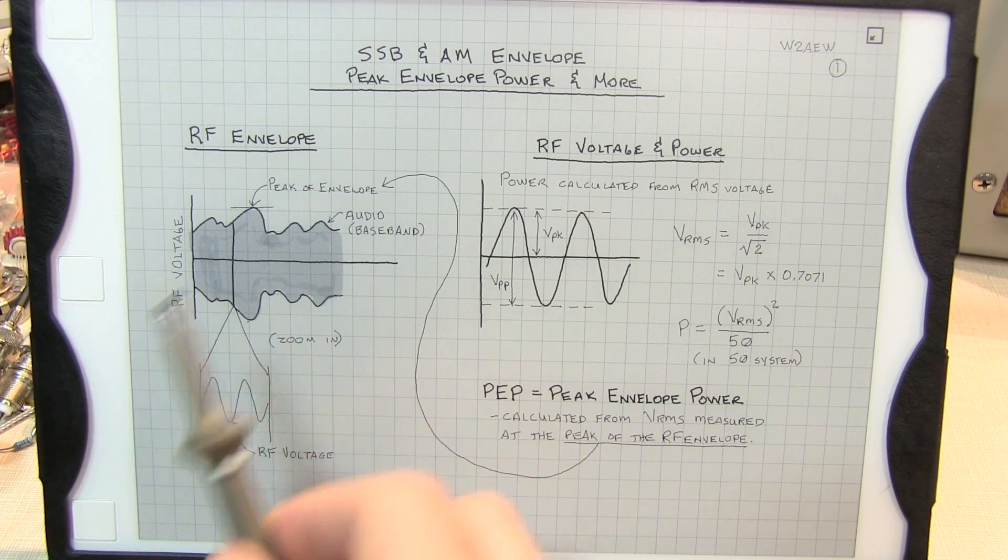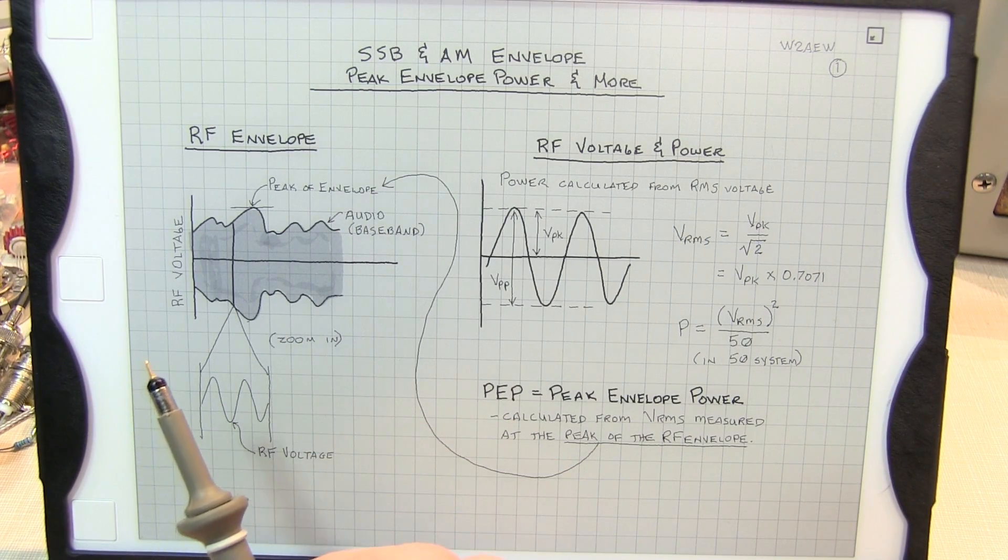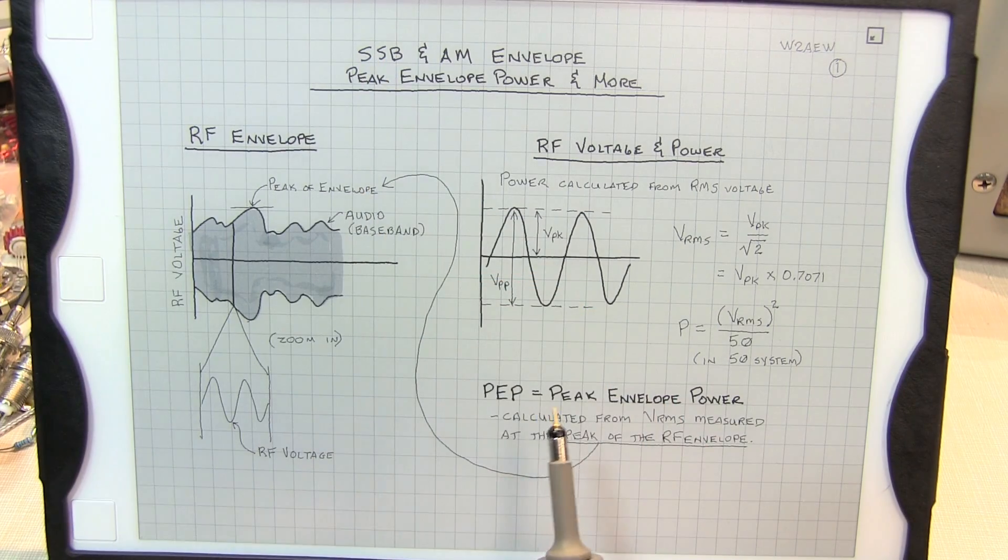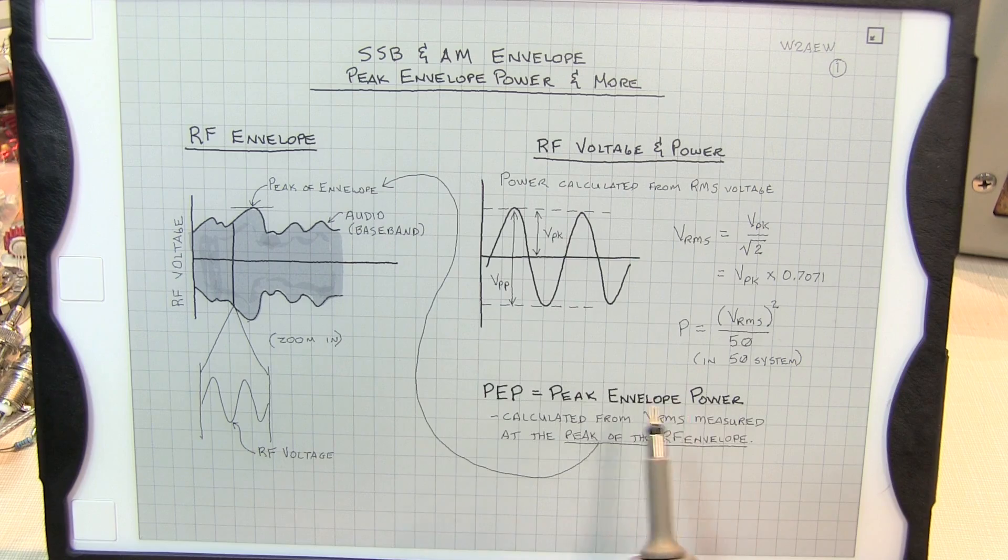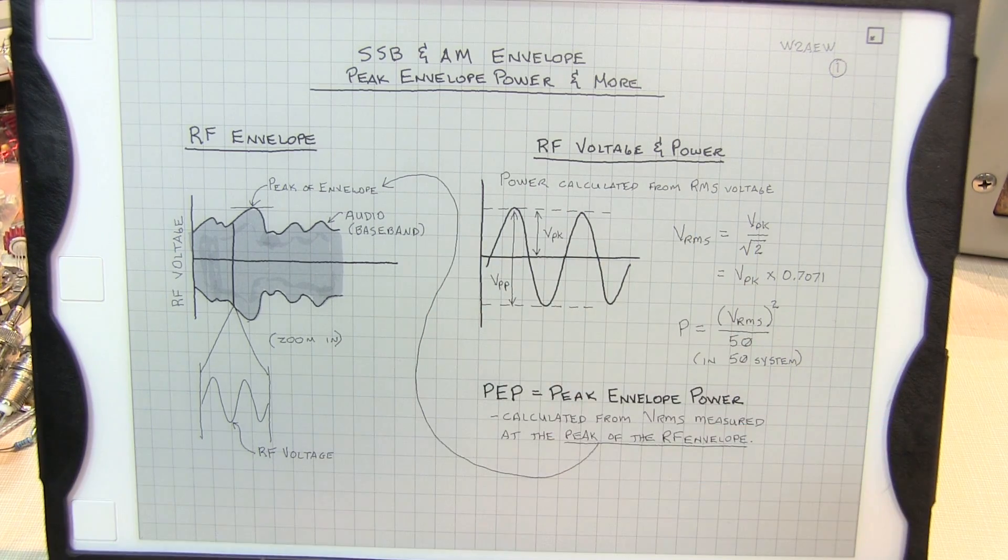The reason we want to talk about the peak of the envelope is because the power measurement for a single sideband signal is often defined by its peak envelope power, but before we talk about that, let's define what we mean by RF power.